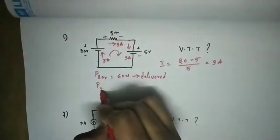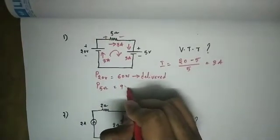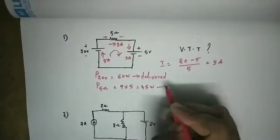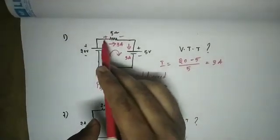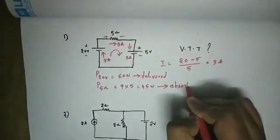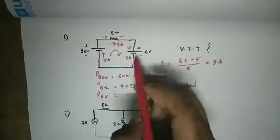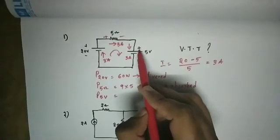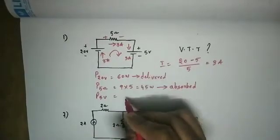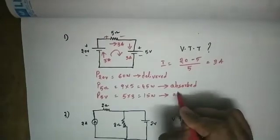This resistor is passive — positive and negative terminals. This is 5 ohms. Power is i squared times R, so 9 into 5 equals 45 watts. This is absorbed power because the current enters the positive terminal. Next, this is the 5V source; it enters the positive terminal, so absorbed power is voltage into current: 5 into 3 equals 15 watts. This is absorbed.